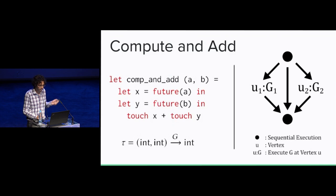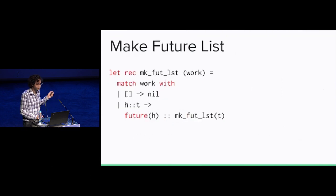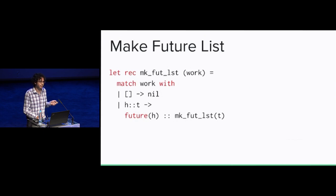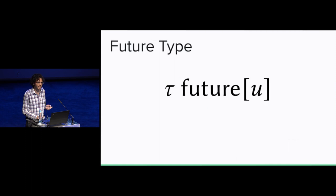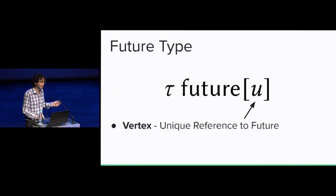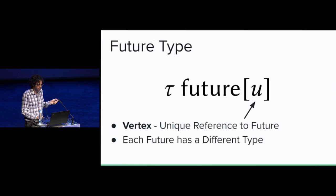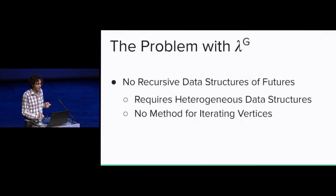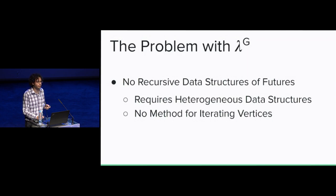Here is another function, make-future-list — pretty self-explanatory, it makes a list of futures. To give this a type, we first need to look at the type of a future. In our language, a future has not only tau (the return type) but also U, which is a vertex — a unique reference to the future in order to enable graph types to work. Because each vertex is unique, each type for each individual future is distinct. This brings us to the problem with the original lambda G: it didn't allow recursive data structures of futures. The reason is that because each future has a different type, the list of futures would be heterogeneous, and there is no method for iterating over vertices to allow this.